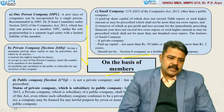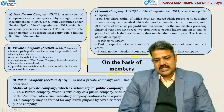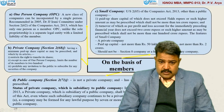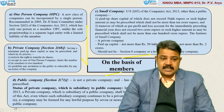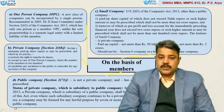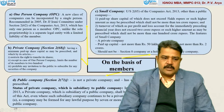The fourth type on the basis of members is public company, defined under Section 2, Subsection 71. It is not a private company and has a minimum paid-up share capital as may be prescribed. A private company which is a subsidiary of a public company shall be deemed to be a public company for the purpose of this act, even where such subsidiary company continues to be a private company in its articles. According to Section 3, Subsection 1, a company may be formed for any lawful purpose by 7 or more members where the company to be formed is to be a public company.